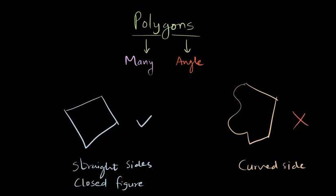An example of an open figure is something like this. It doesn't end exactly where it started. So you take any point on a polygon, it starts there and it ends there with the straight sides. But this is an open figure and this is also not a polygon. So you already know about a few polygons.